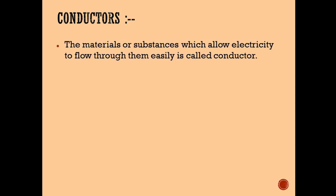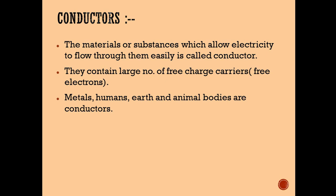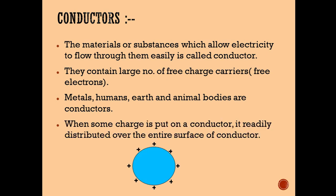A conductor is a material or substance which allows electricity to flow through it easily. Conductors contain a large number of free charge carriers. In a metallic conductor, charge carriers are electrons; in an electrolytic conductor, charge carriers are positive and negative ions. Metals, humans, earth, and animal bodies are conductors. When some charge is put on a conductor, it readily distributes over the entire surface.